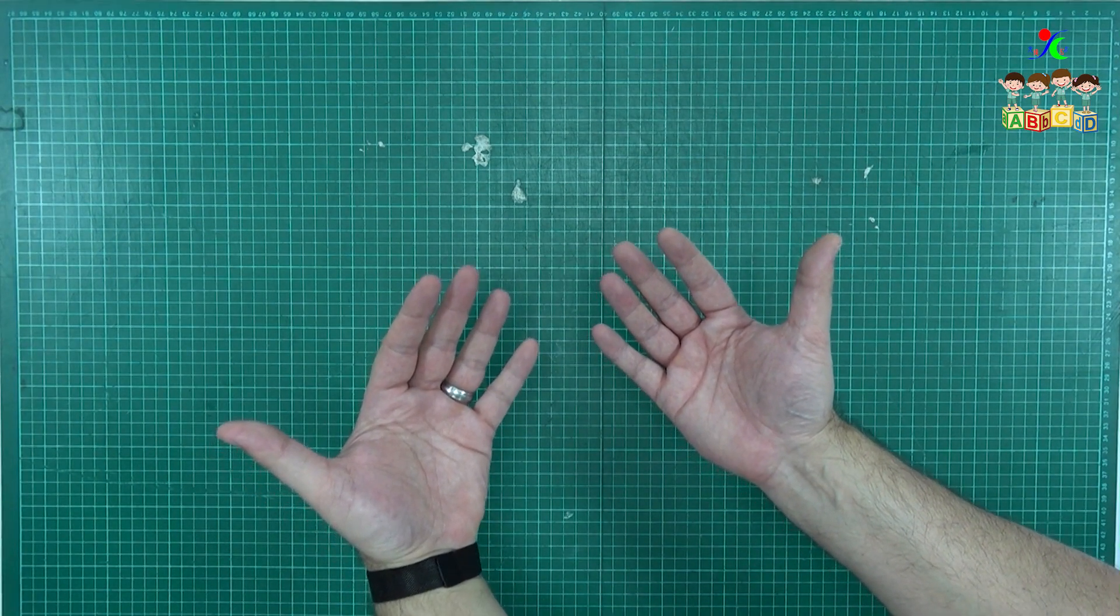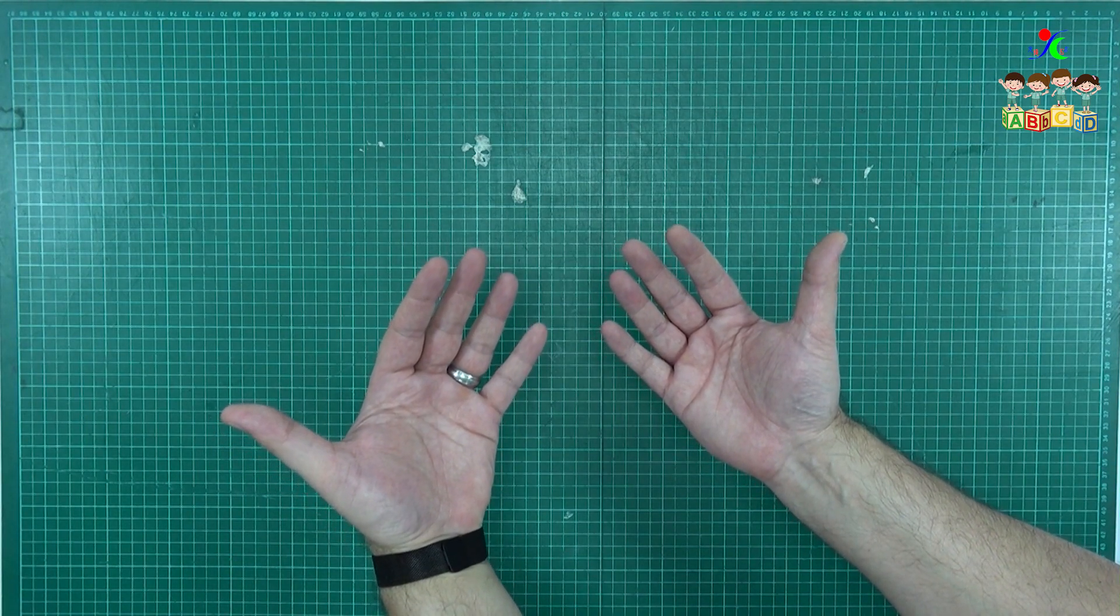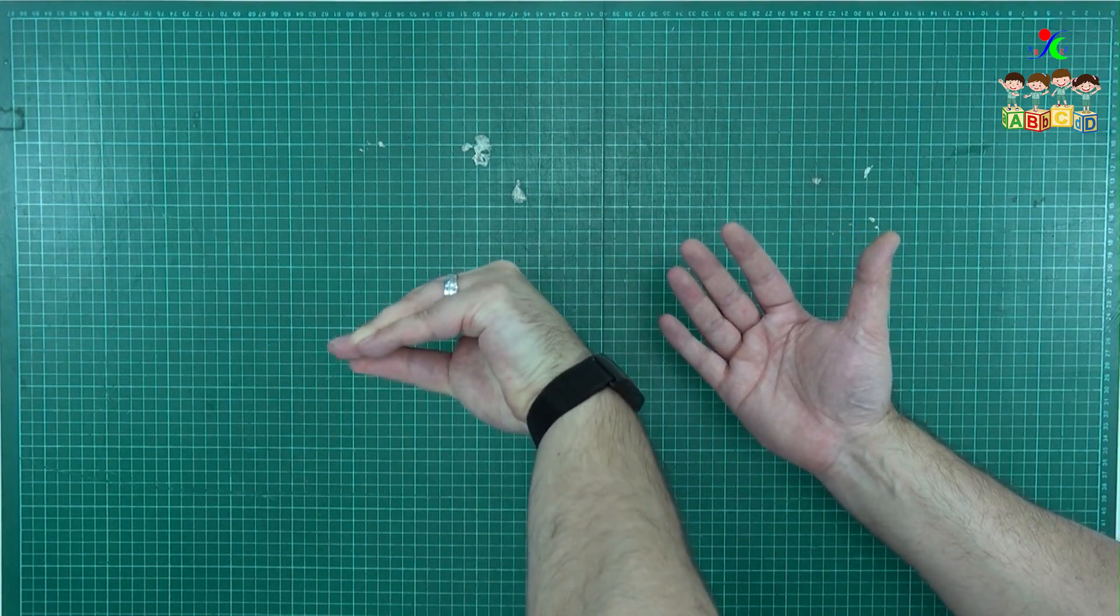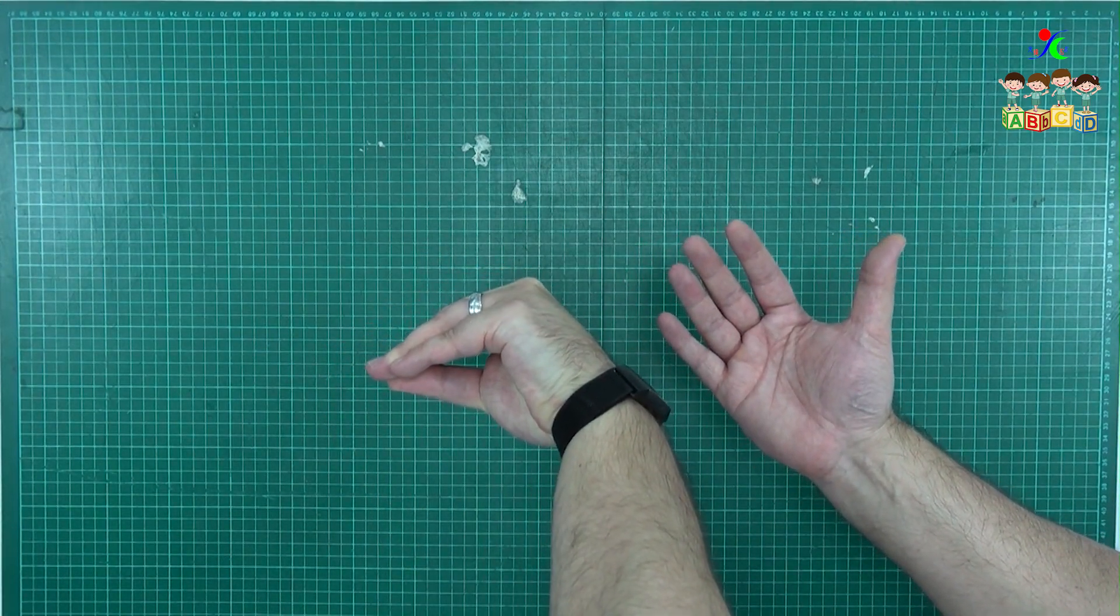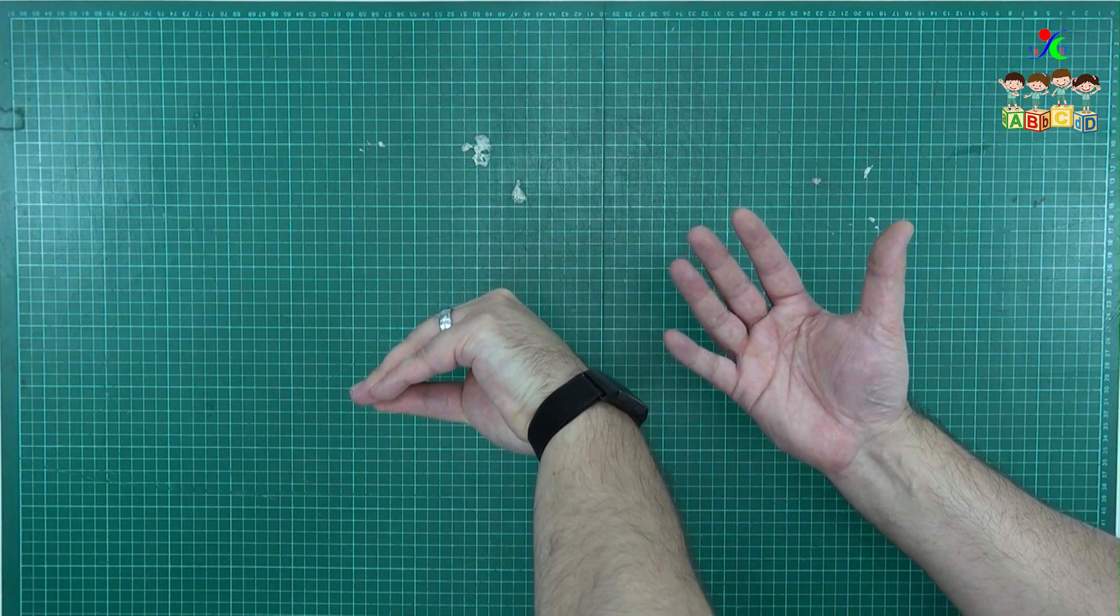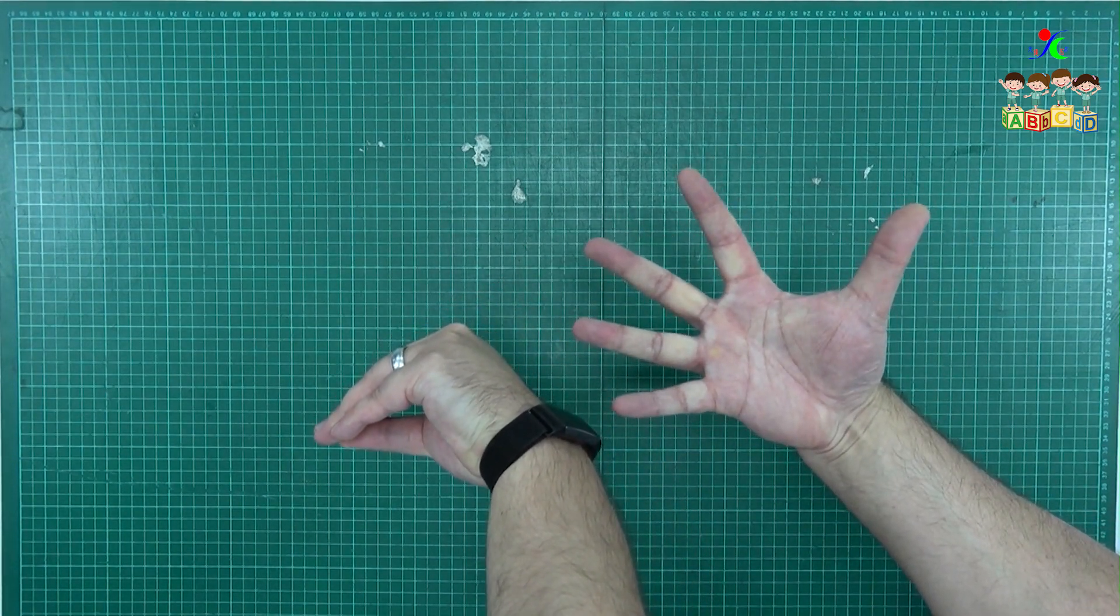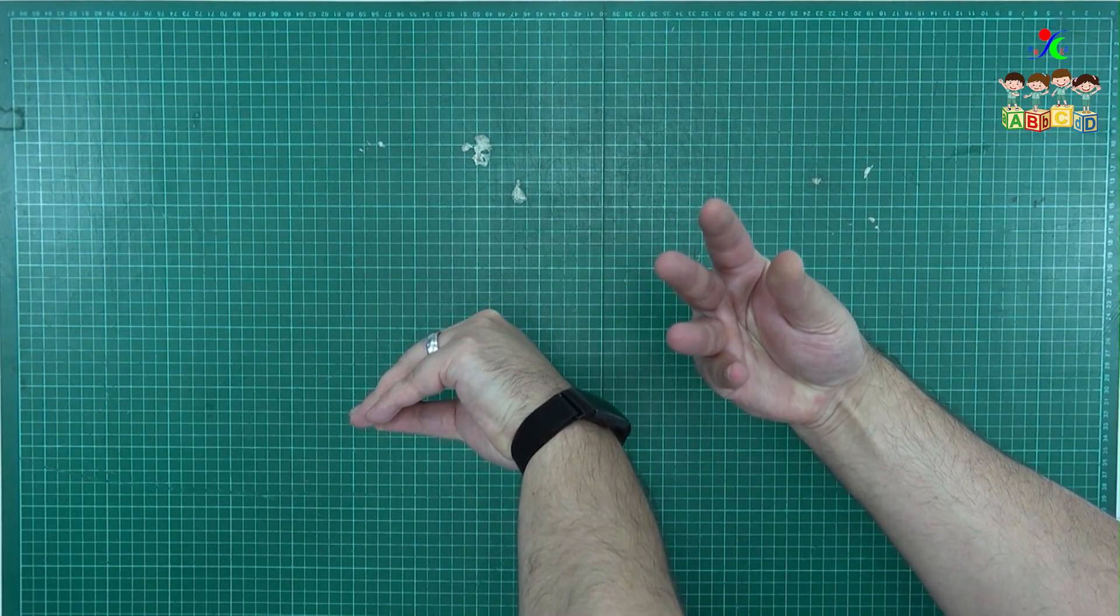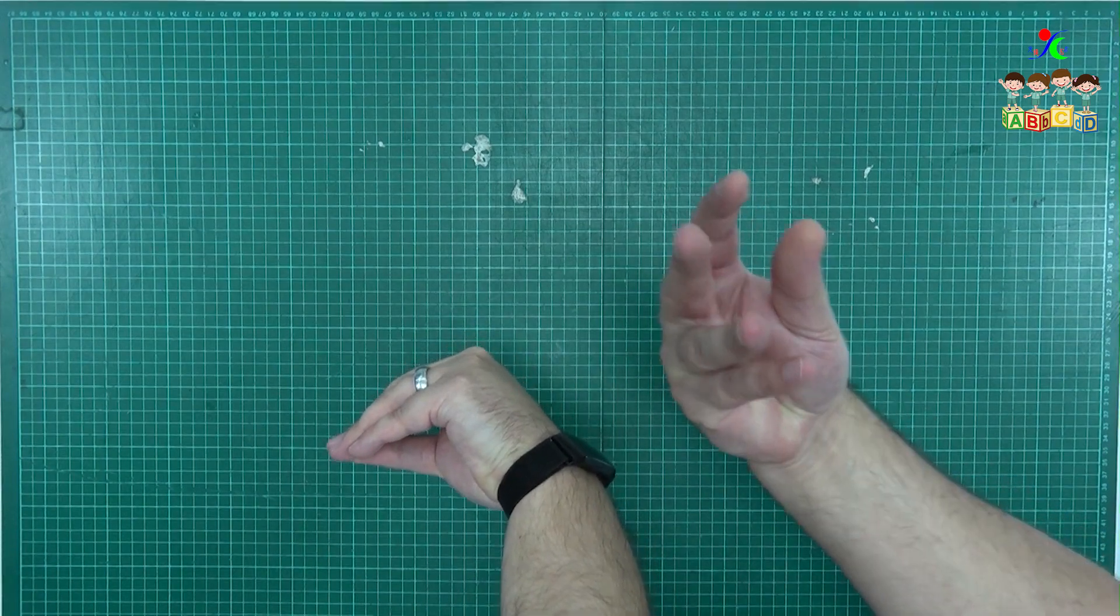To make a shadow deer, first touch all your fingers together of one hand. Then, on your other hand, spread your fingers out and point them up. Finally, touch your hands back to back.